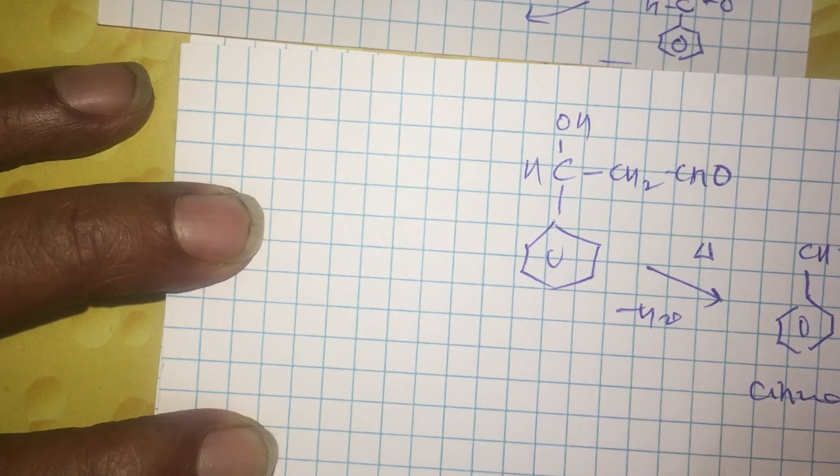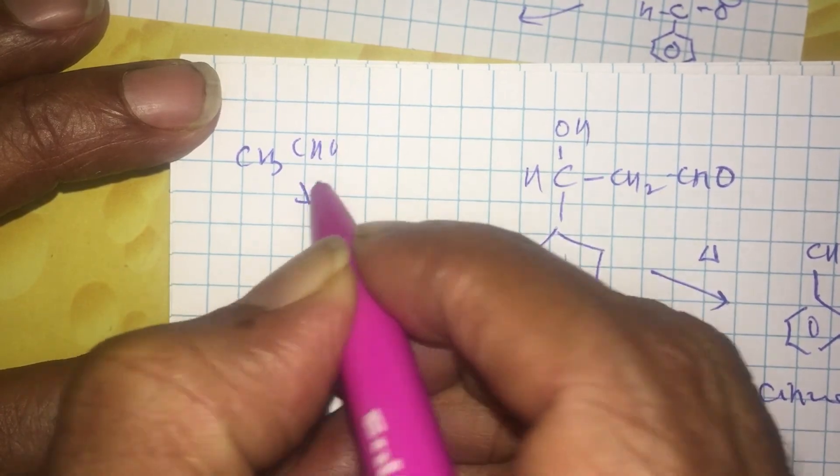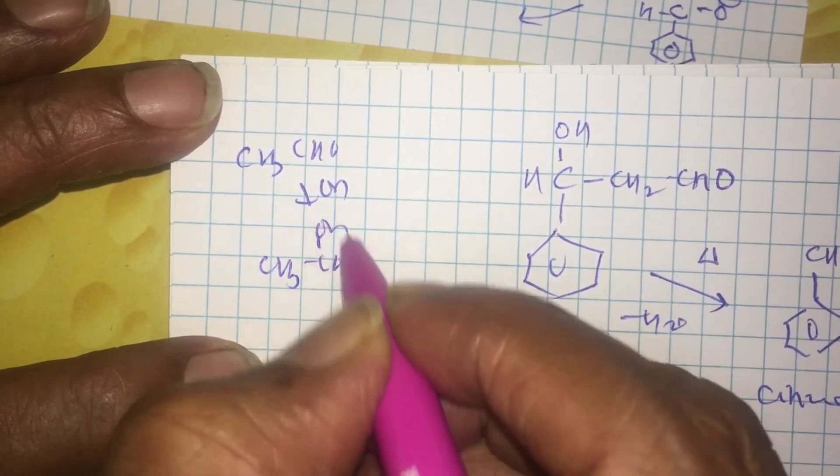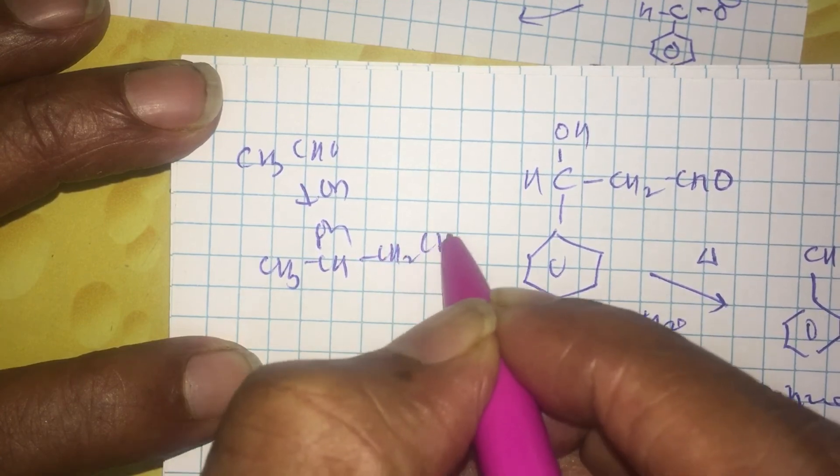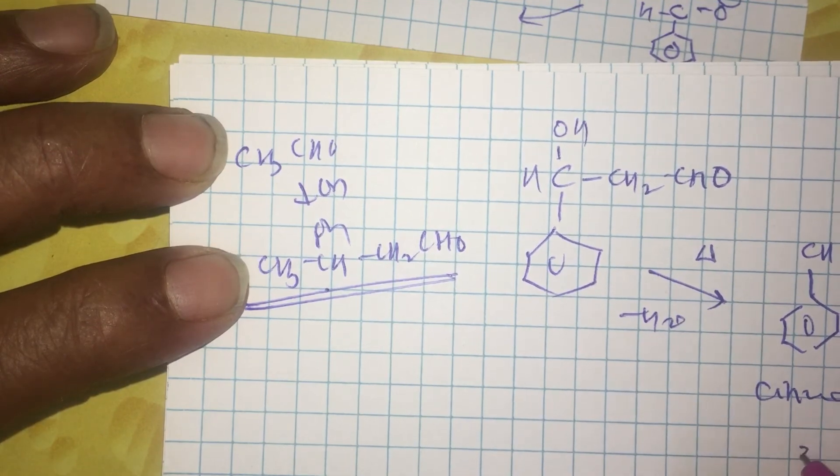Cinnamaldehyde. This is the second product. The first possible product is, of course, the acetaldehyde can combine with itself in basic medium to give you CH3-CHOH-CH2-CHO, one possible product. So, total number of products you are getting is two.